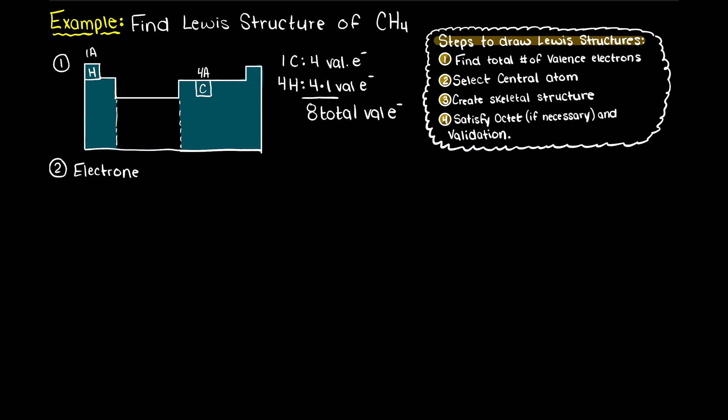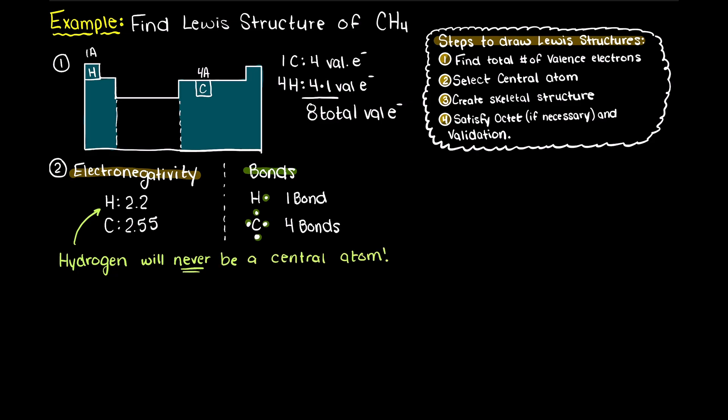Next we need to find what is going to be our central atom. I have listed the electronegativities of both hydrogen and carbon here. Remember that we typically use our least electronegative atom as our central atom. However, as is common in chemistry, there are exceptions to our rules. Hydrogen is one of those exceptions and will never act as a central atom, as it can only make a single bond, whereas our carbon atom can make 4 bonds and is therefore preferable as our central atom.